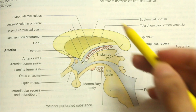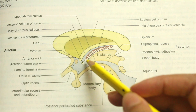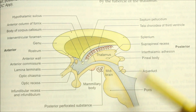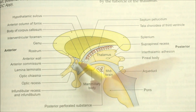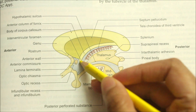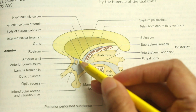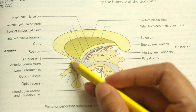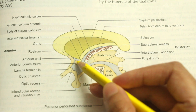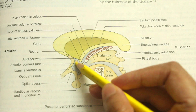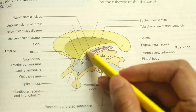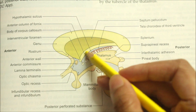Now let's learn about the boundaries of the third ventricle. Looking at the anterior wall, it is formed by the lamina terminalis, the anterior commissure, and the anterior column of the fornix.